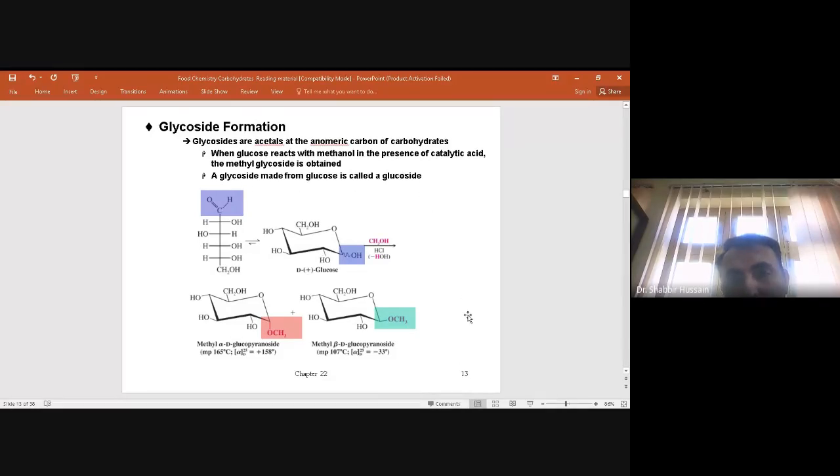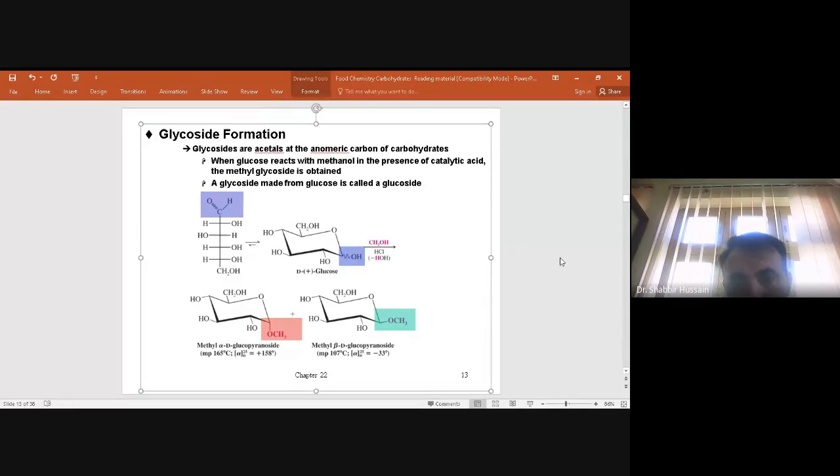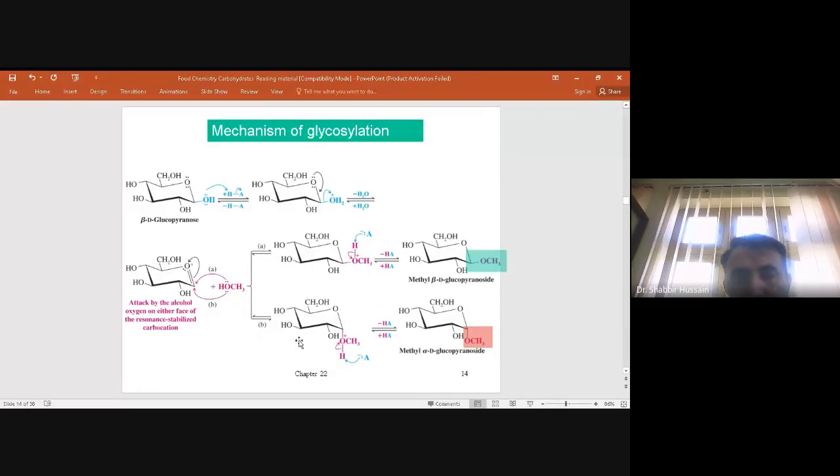In glycoside formation, a glycoside made from glucose is called a glucoside. Basically, two products may form due to these phases—one is the beta product and another is the alpha product.